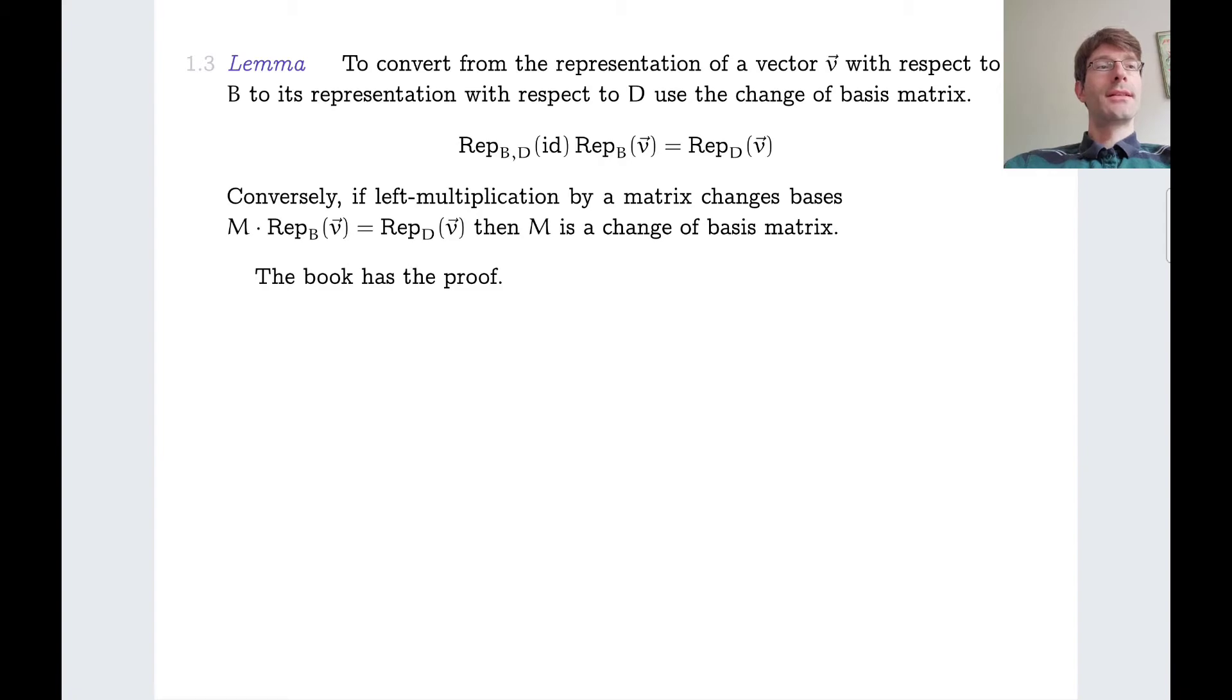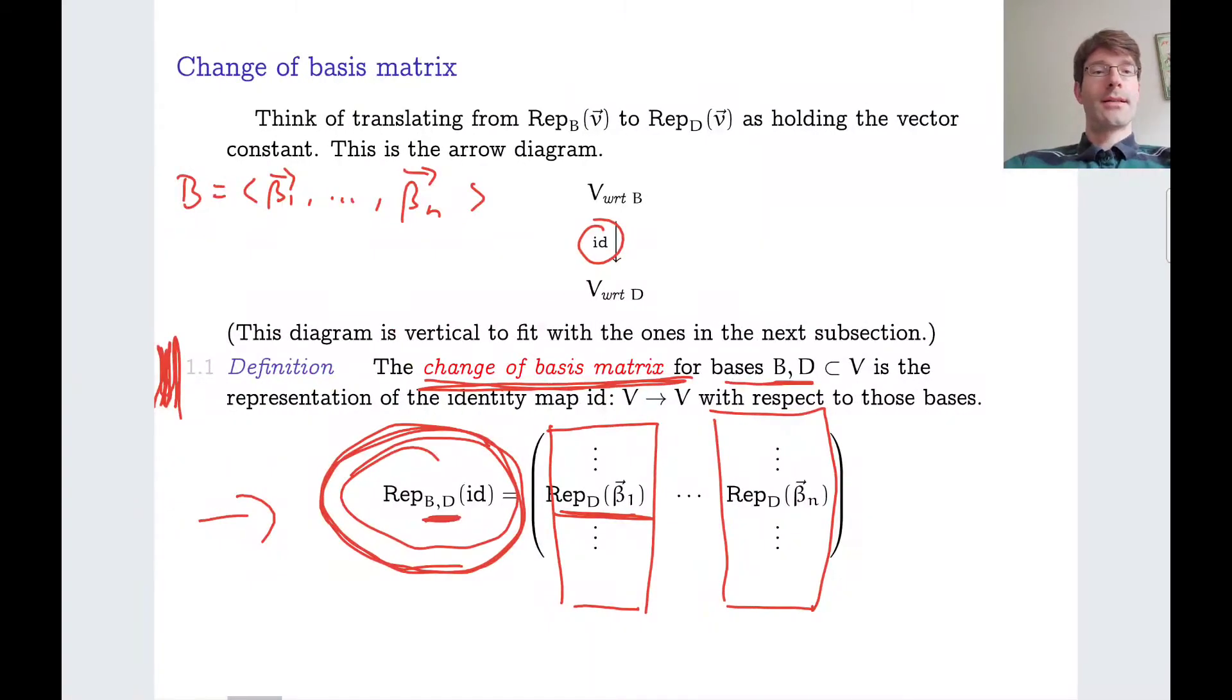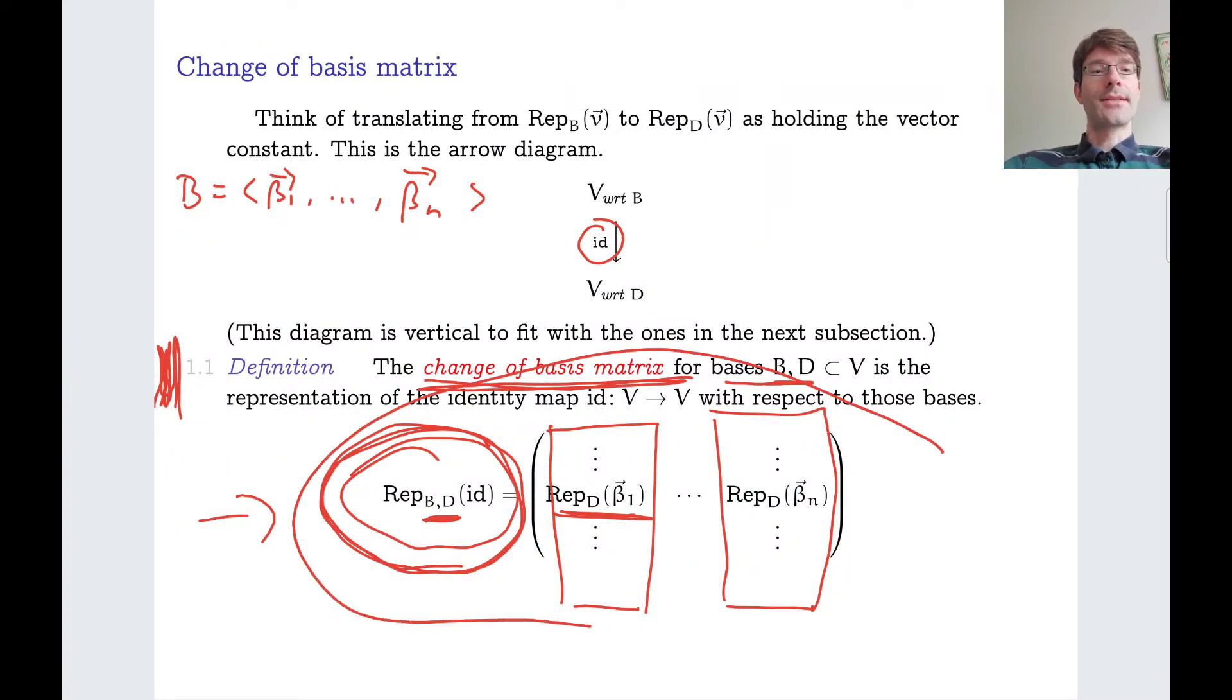And then again using the previous things, we arrive at this equality. So in order to go from the representation with respect to B to a representation with respect to D, we simply multiply with this matrix. And then the lemma also says, if left multiplication by a matrix M changes basis in this way from B to D, then M is a change of basis matrix. So then M has the form that is described in this definition.